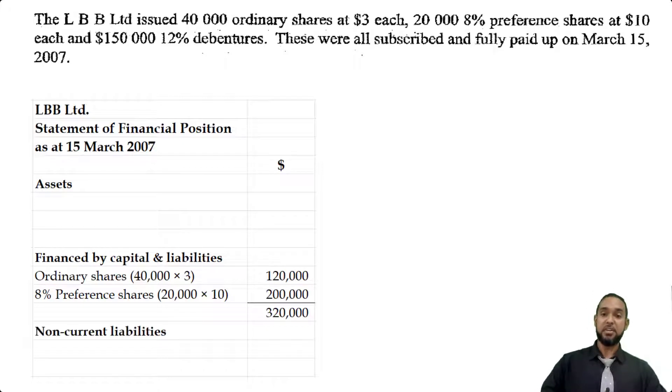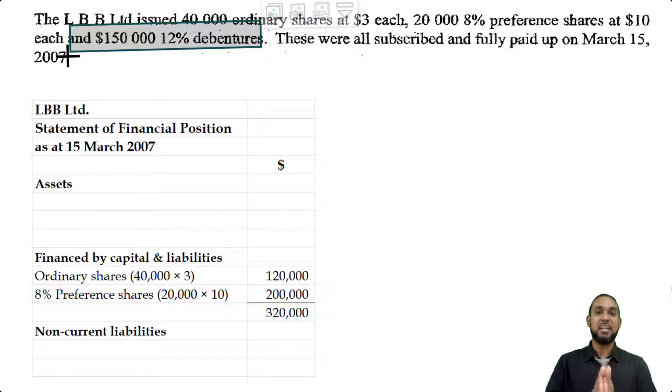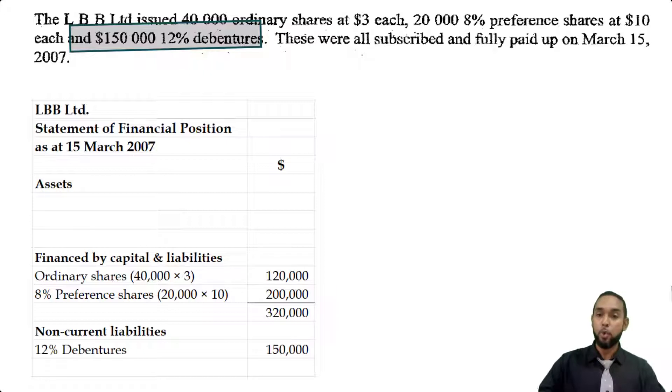Now the debentures are classified as non-current liabilities. It was 150,000 12% debentures. 12% is the interest rate that we pay on the loan. Debentures are loans. But we pay that interest in the income statement. When we pay the interest, that's debit interest expense and credit cash. That has nothing to do with when you issue the debentures. The value of the debentures is just 150,000 dollars. The 12% has no bearing on that at all.